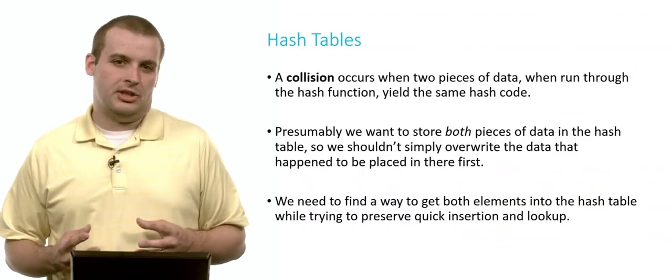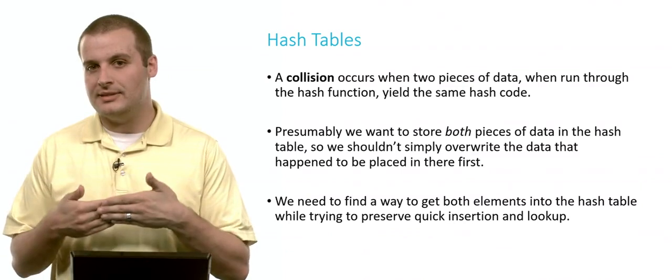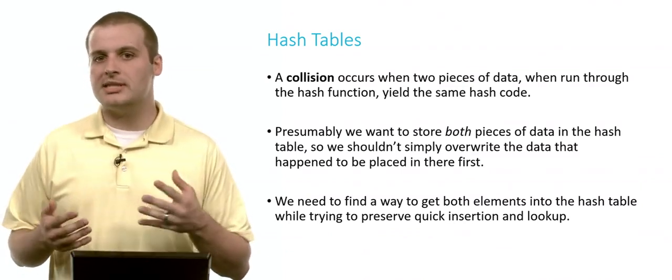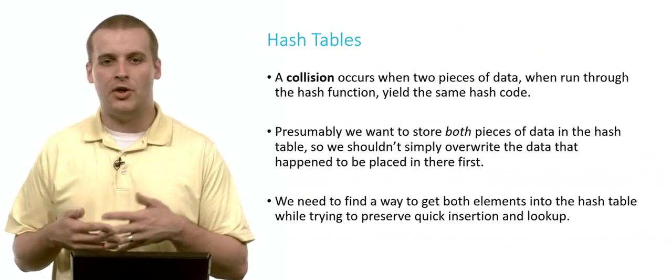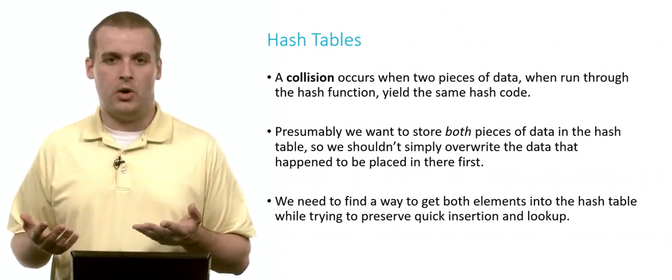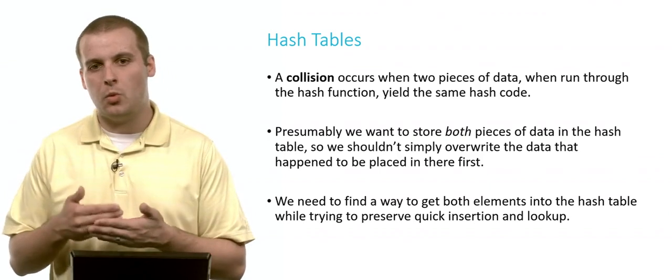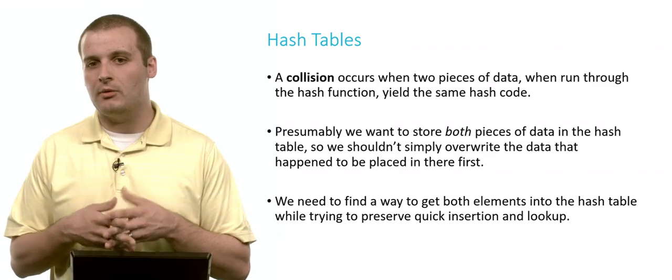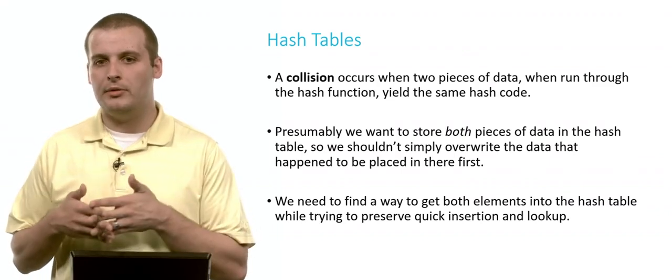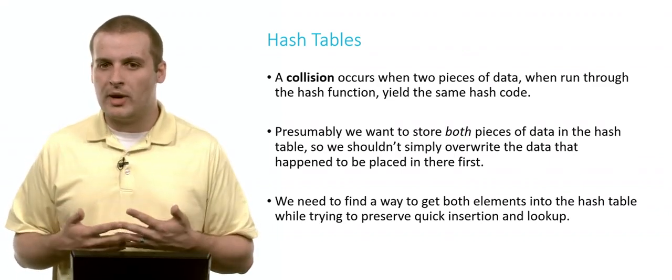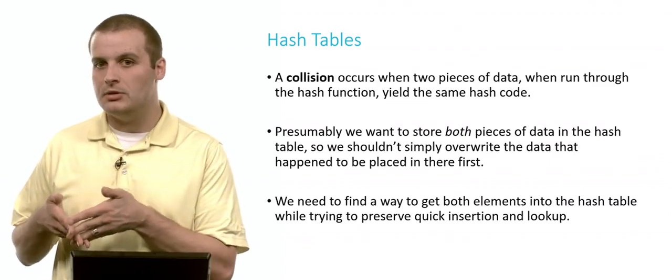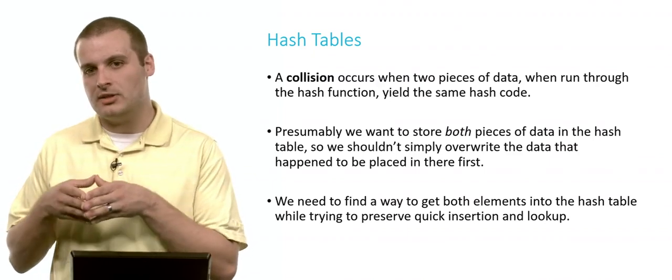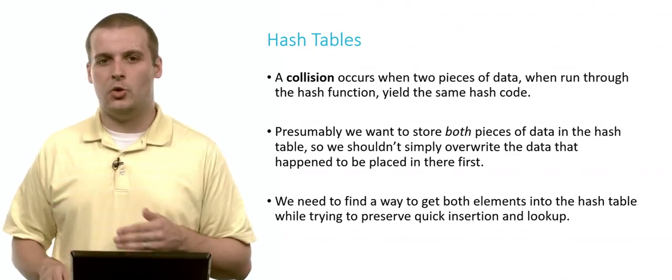We call this a collision, and a collision occurs when two pieces of data run through the same hash function yield the same hash code. Presumably, we still want to get both pieces of data into the hash table. We presumably want to get Ringo into that array. How do we do it, though, if he and Paul both yield hash code 6? We don't want to overwrite Paul. We want Paul to be there, too. So we need to find a way to get elements into the hash table that still preserves our quick insertion and quick lookup.